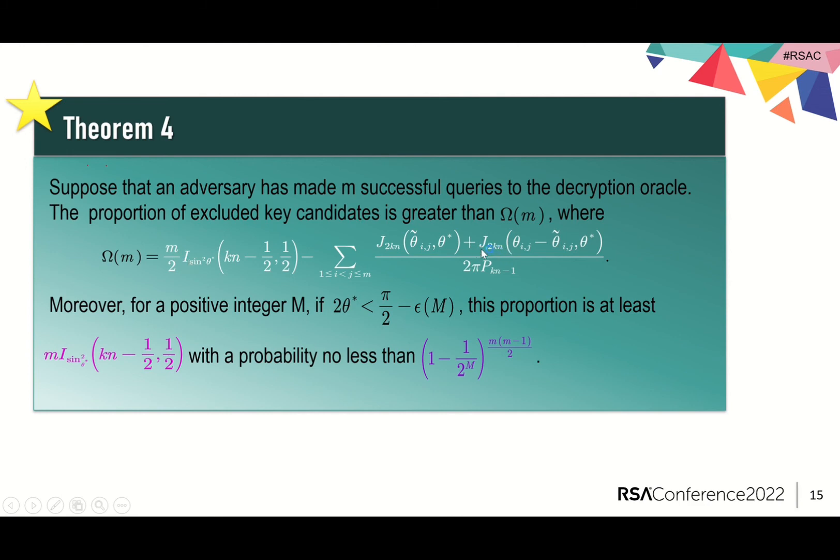The definitions of J and p can be seen in our paper. Moreover, if 2 theta star is smaller than pi over 2 minus epsilon_m, this proportion can be raised to m times I, with a probability no less than this value.